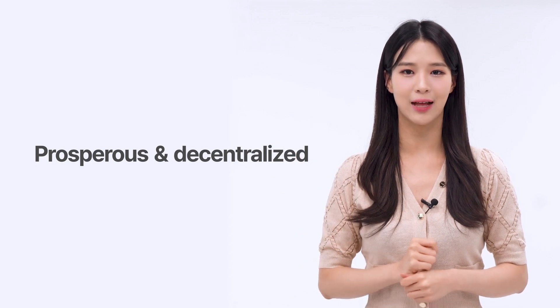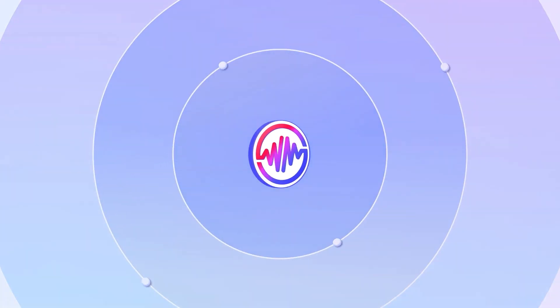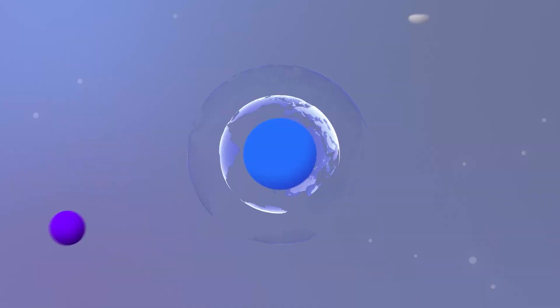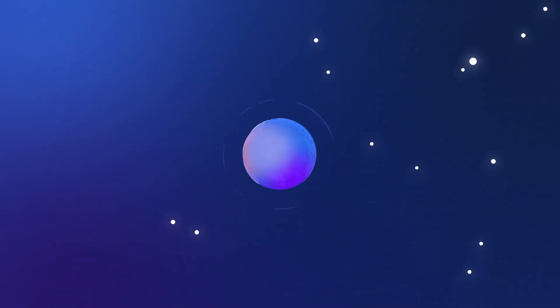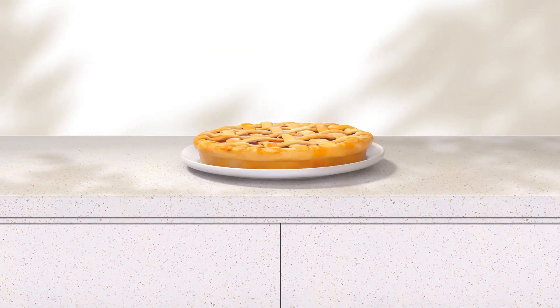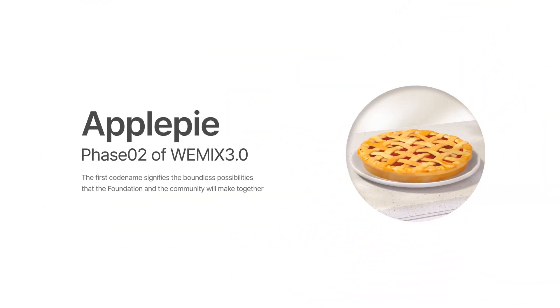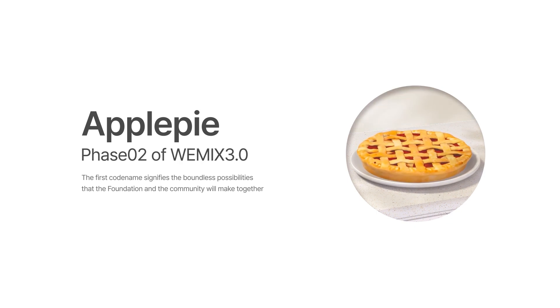ApplePie represents the transformation of the boundless possibilities within the blockchain realm into a more advanced and refined form. We embrace the responsibility to innovate services and decentralized technologies, enriching the lives of our community members in a prosperous and decentralized manner. This hard fork of Wemix 3.0 is an integral component of our innovative approach towards democratized governance. The codename ApplePie symbolizes the harmonious fusion of various components, like a mix of dough created jointly by the foundation and the community.